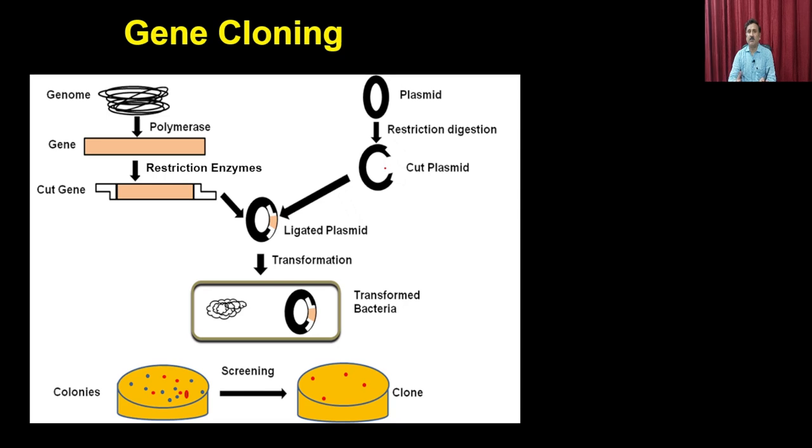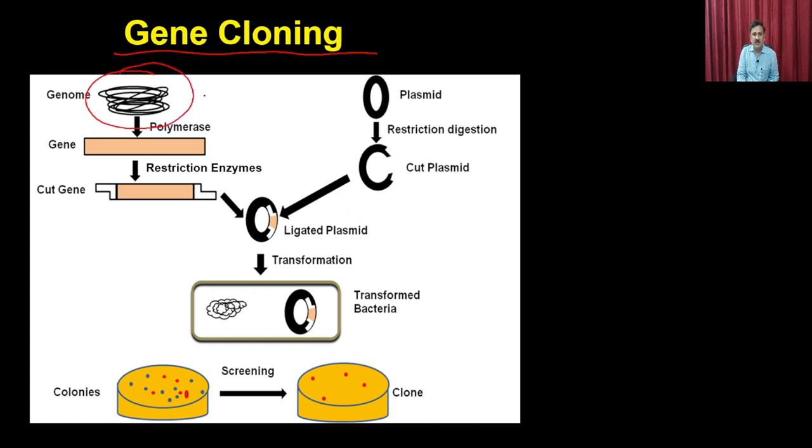The first process in this whole scheme is the identification of the gene of your interest. Identification of the gene of interest can be done by multiple approaches. In this lecture, we will discuss the different approaches used, under what conditions you use one approach over another, and how to use them systematically. The first step is isolation of your gene of interest from the genome.